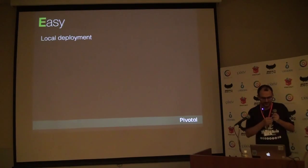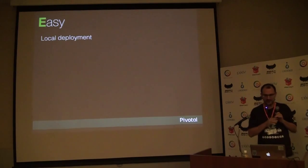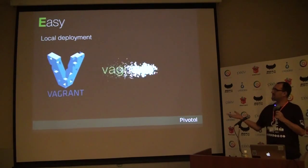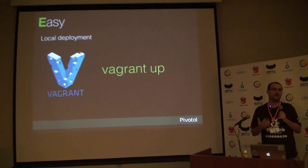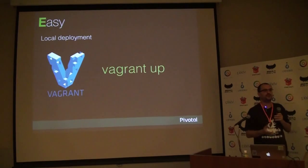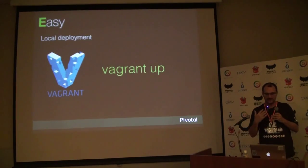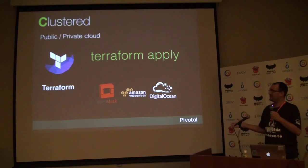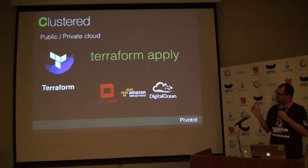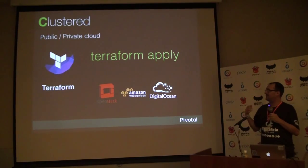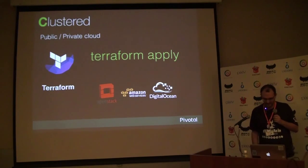Now let's check what you can do and how you can do it with Lattice. It's very easy to install Lattice — you just need to use Vagrant and run 'vagrant up'. That's all, and you can already start deploying your application. But if you have three or four developers and want to share the same environment, or you want to put Lattice in your public or private cloud, you can use the cluster version of Lattice with 'terraform apply'. OpenStack, AWS, and DigitalOcean are supported, and if you want to add support for vSphere, you can contribute to Lattice — every pull request is welcome.